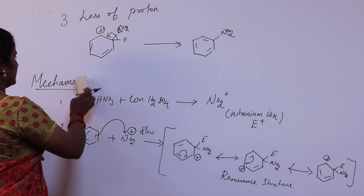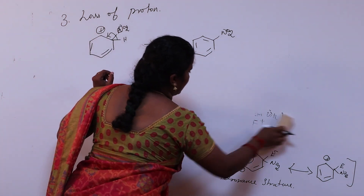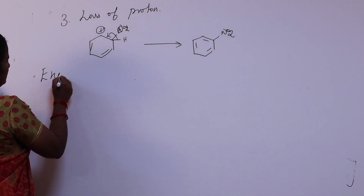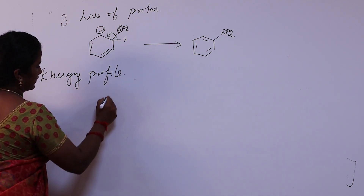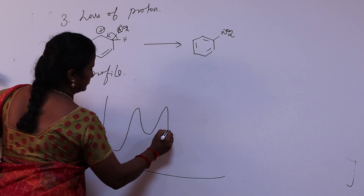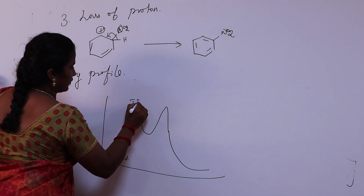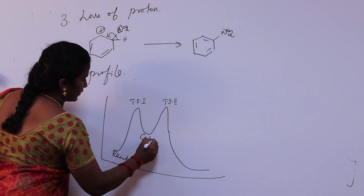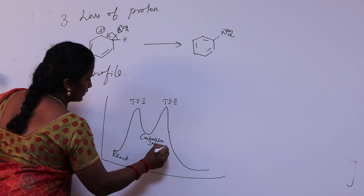Next, we look at the energy diagram for this reaction, showing the rate of reaction as an energy profile. The diagram shows the reactant, then transition state 1, followed by the carbocation intermediate at lower energy, then transition state 2.